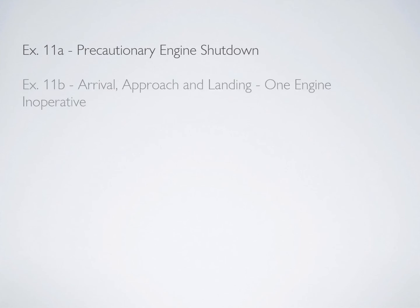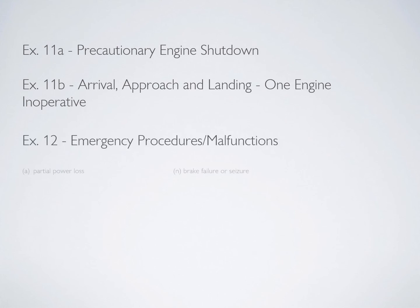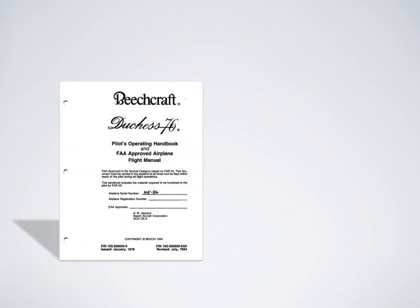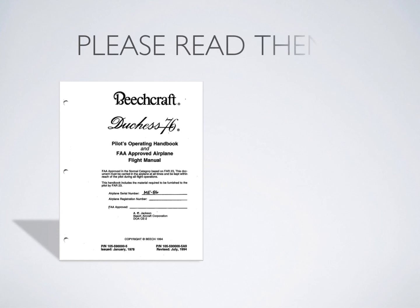The emergency exercises include a precautionary engine shutdown — of course simulated — for example if you were to have an engine fail in cruise flight, as well as an arrival, approach, and landing with one engine inoperative. And then of course you have the emergency procedure checklists, which can be done on the ground.